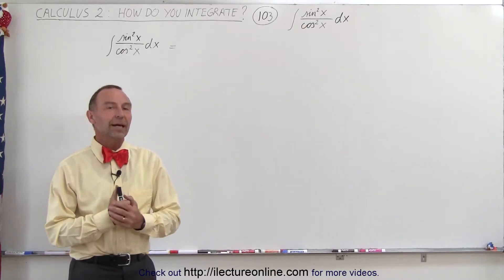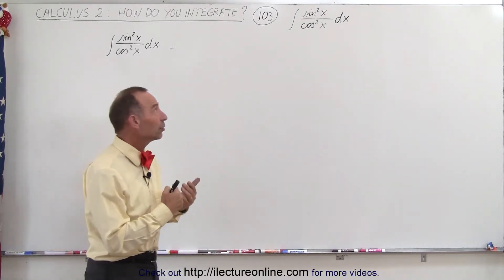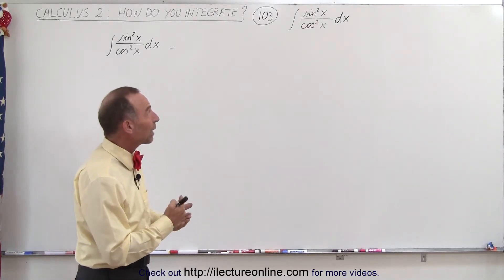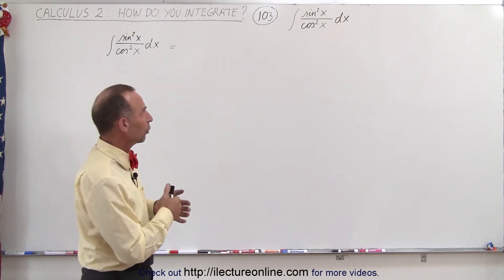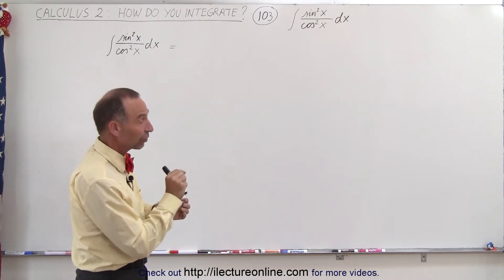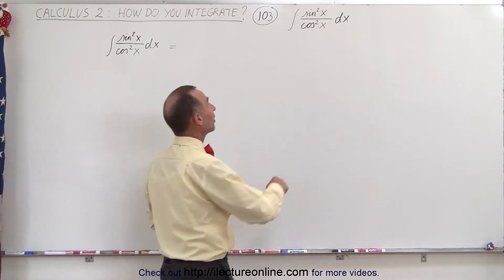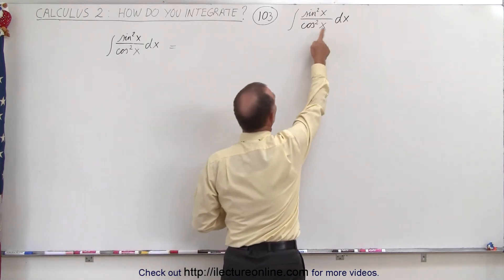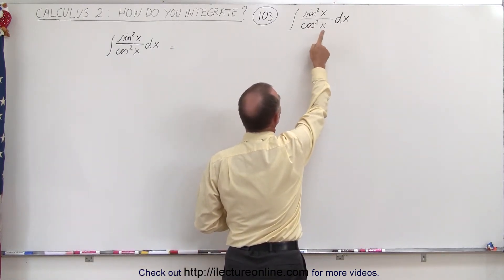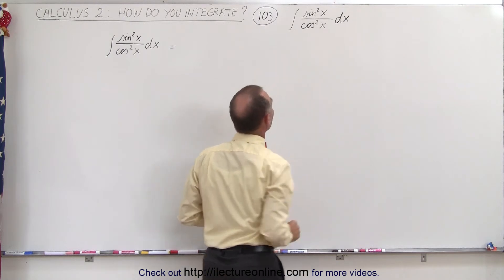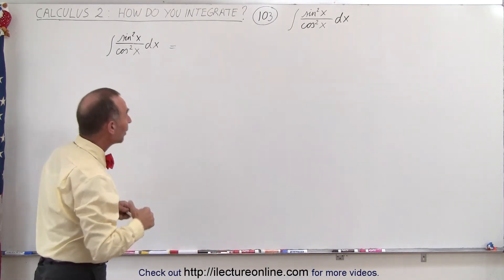Welcome to Electron Line. Now let's see how the integral changes when we have a cosine square in the denominator instead of just a cosine. This looks very similar to the previous video, but instead of sine square over cosine of x, we have the sine square of x over the cosine square of x. So how do we approach that one?